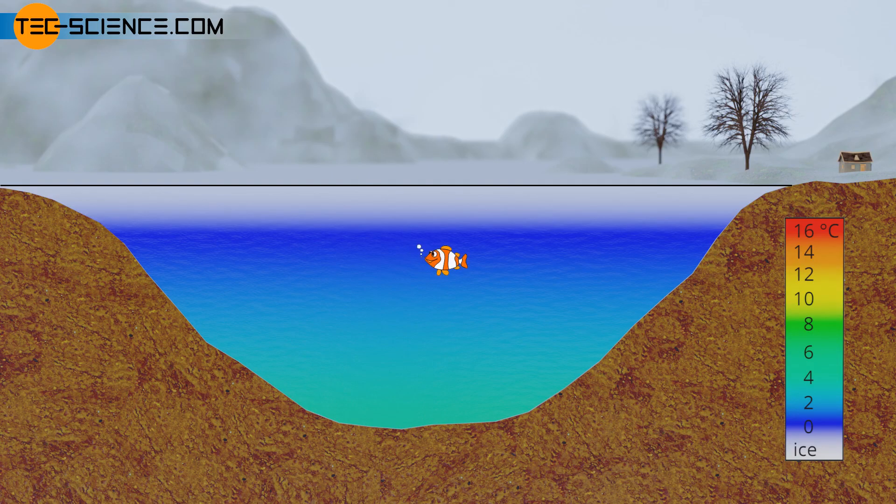Without the density anomaly of water, the cold water layers would sink to the ground in winter. The warmer layers would be displaced and rise to the surface. This would lead to a rapid cooling of the water until it freezes completely. The fish in such waters would not survive.